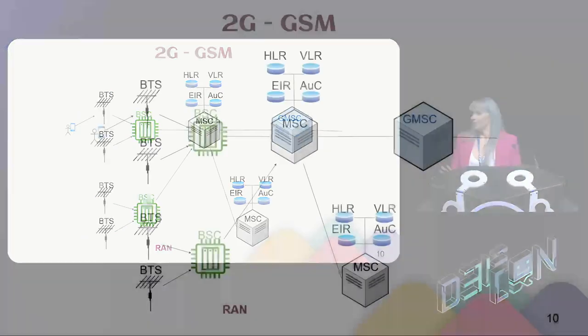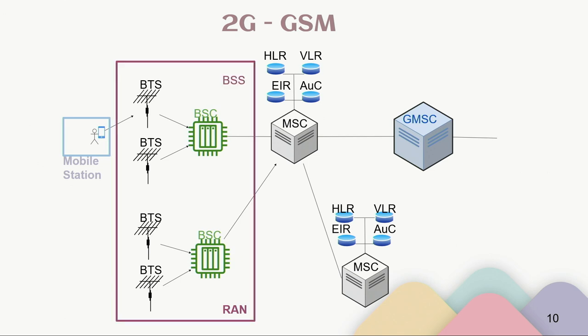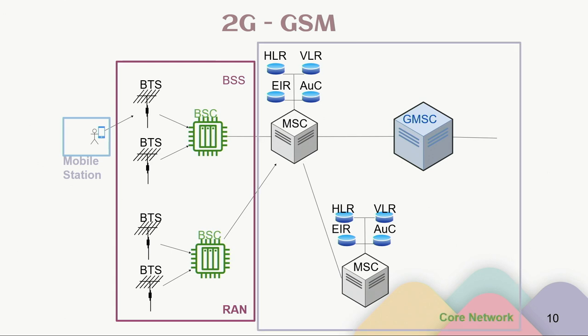So let's take a look at it all together. The user speaks into their 2G capable device — that's our mobile station. The mobile station sends the signal to our base transceiver station, handled by the base station controller. That comprises our radio access network. Next, it hands things off to our core network in the form of our mobile switching center with all those registers, then our gateway mobile switching center, which reaches out to general external networks like our PSTN.